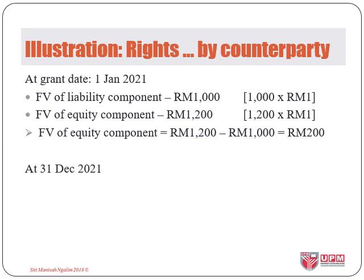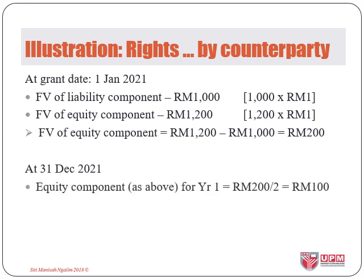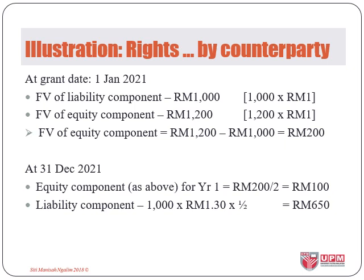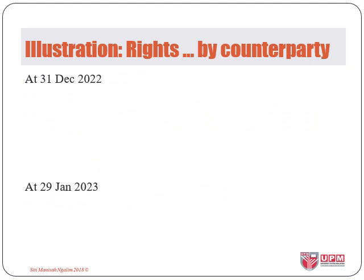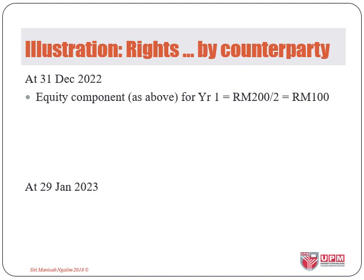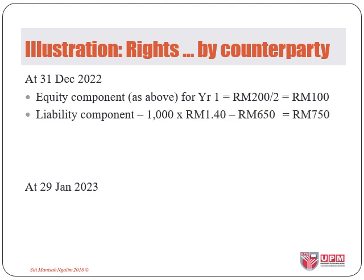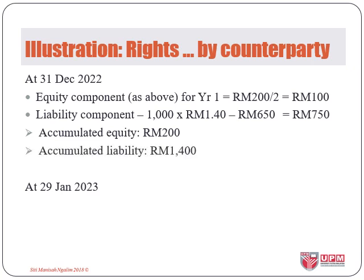At end of year one, we recognise the equity component of RM200 for one-half of the vesting period, giving RM100, and debt components at fair value of RM1 for 1,000 SARs for half the vesting period, giving RM650. At end of year two, we recognise the equity component again at RM100 being half of the total fair value, and the debt component at RM750 being 1,000 units of SARs at RM1.40 fair value minus year one recognition. Therefore, at end of year two, we have accumulated equity of RM200 and accumulated liability of RM1,400.